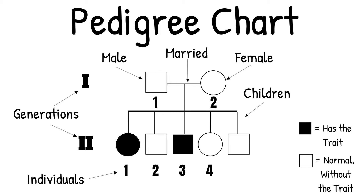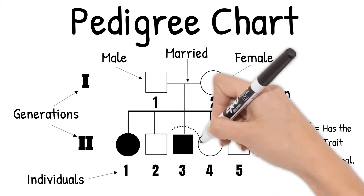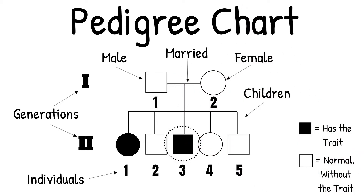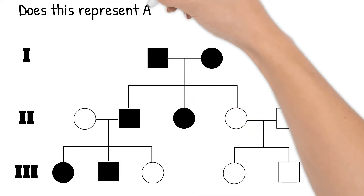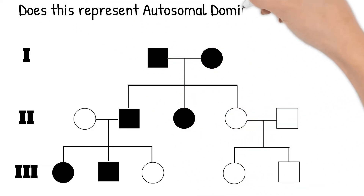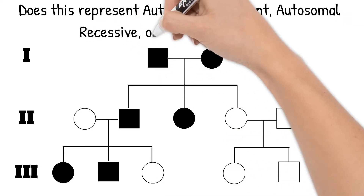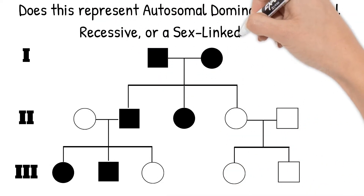This is helpful to talk about a person within the pedigree chart. For example, individual 2-3 has the trait in this pedigree chart. You might be shown a pedigree chart and asked if it shows inheritance of an autosomal dominant, autosomal recessive, or sex-linked gene.